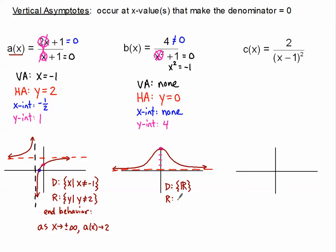The range is a little different here. We don't get any negative values, and we don't even touch 0, so the lowest value in our range is 0, which we don't include — hence a parenthesis. We get every value up to 4, and we do include 4, so we use a bracket there. For end behavior, since both ends do the same thing, as x approaches positive or negative infinity, b of x is approaching 0.